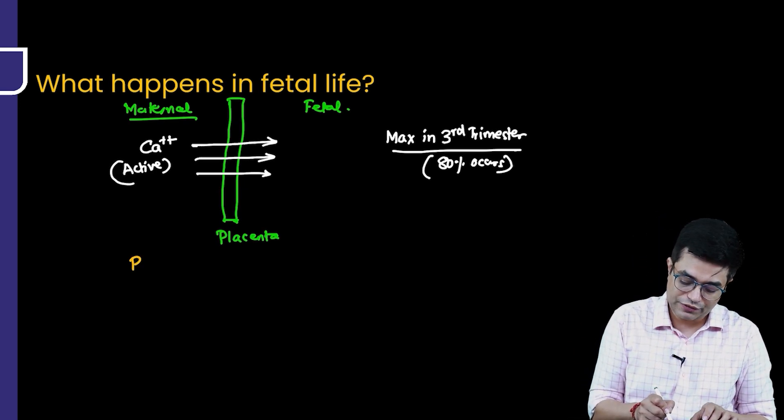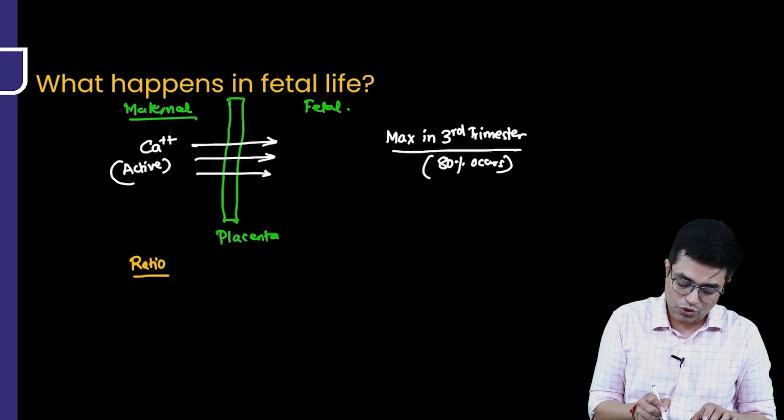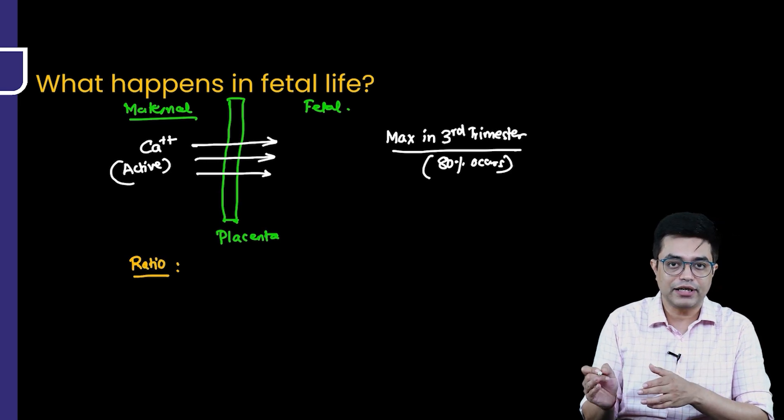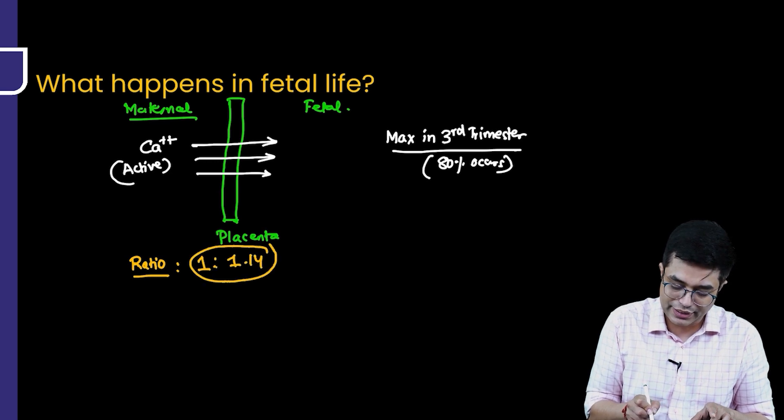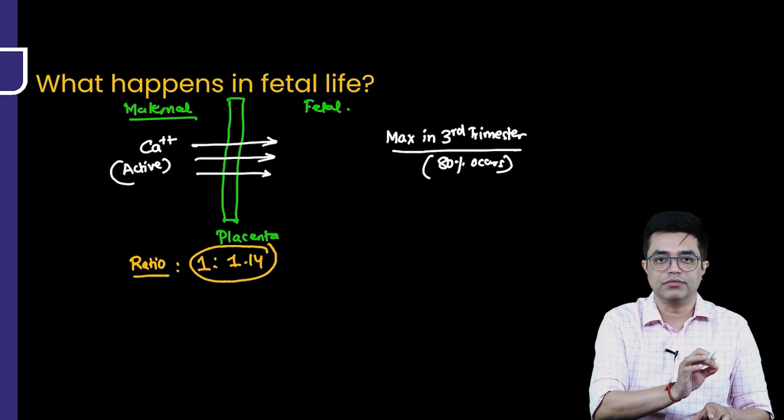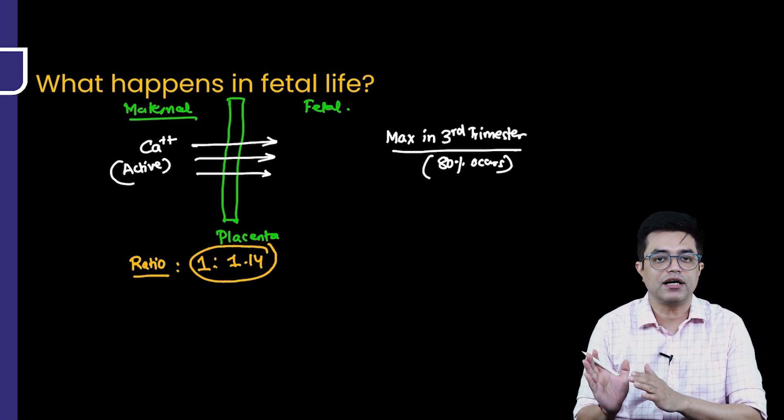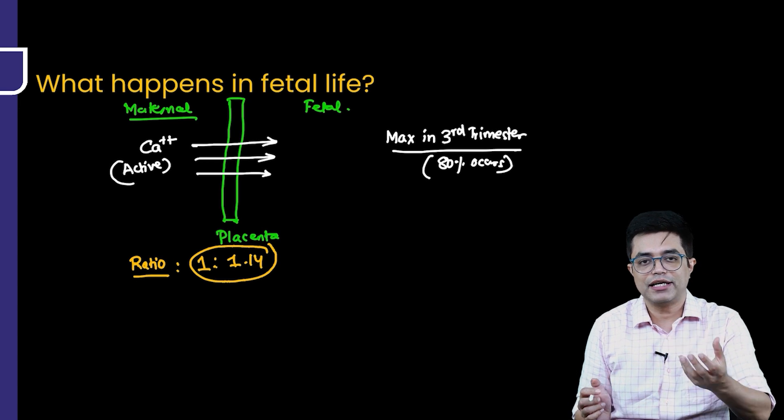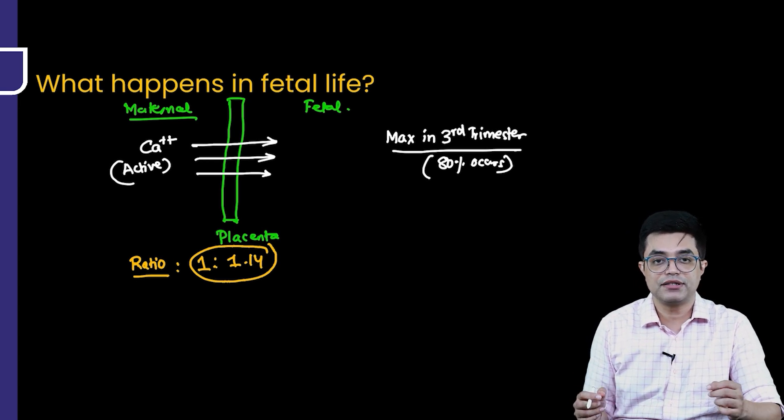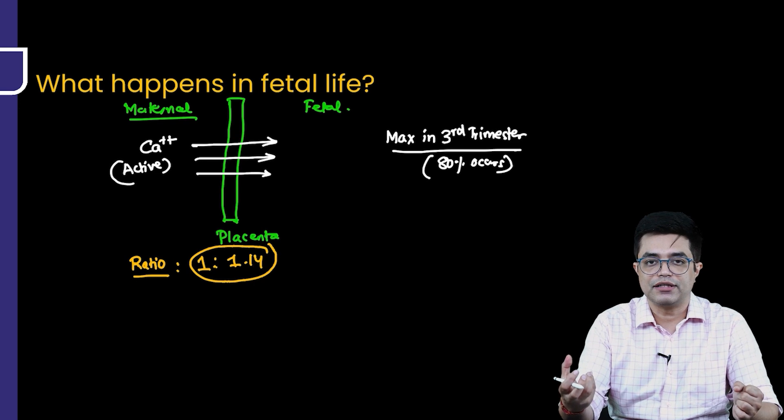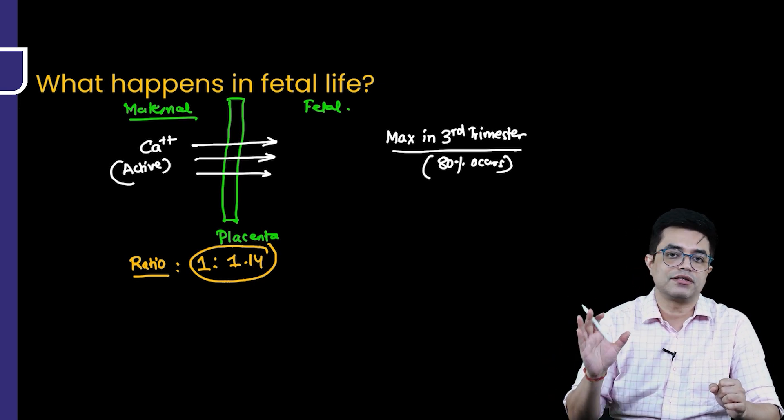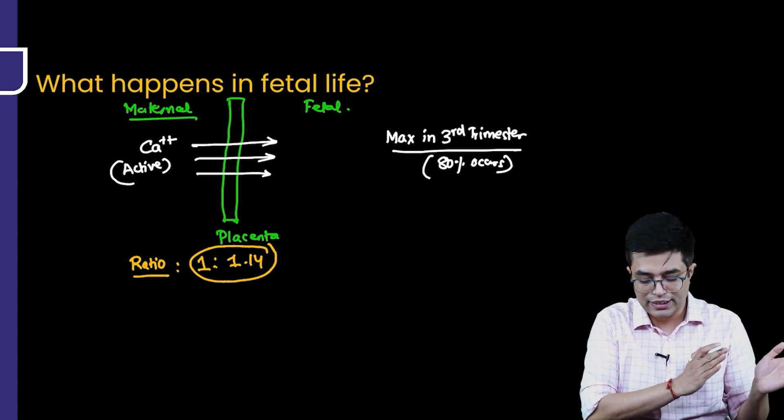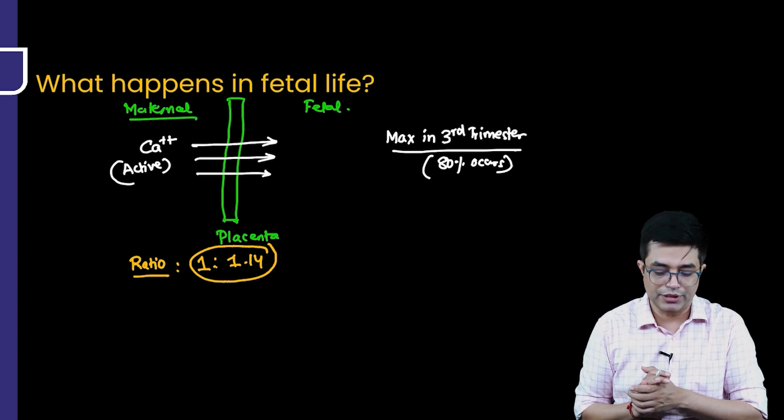And what is the ratio if somebody asks you? The ratio of mother to fetal calcium levels is in the range of 1 to 1.14. So it is higher in a fetus as compared to mother especially in the last trimester. Why is the calcium needed in the last trimester? Because ossification of the skeletal system in the fetus reaches its peak in the third trimester and that is why there is an active calcium transmission which is happening.